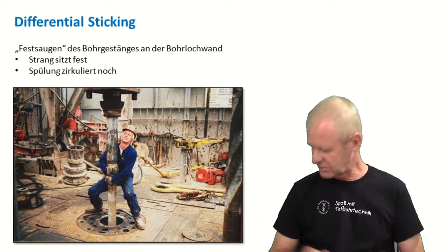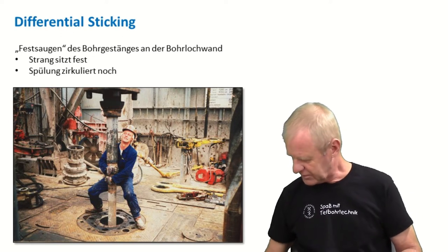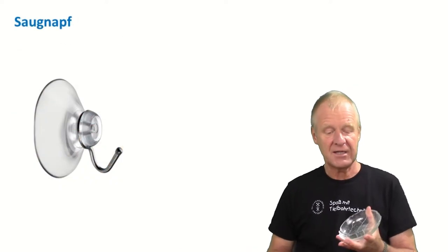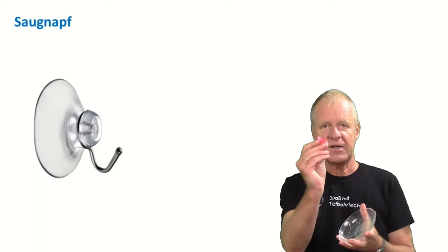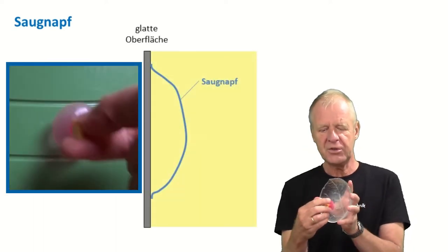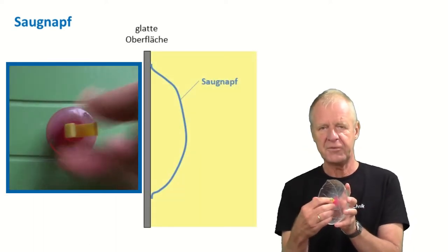It can be best explained with a suction cup. If I take such a suction cup and press it against a smooth wall, then the air under the cup is compressed and a part of it will escape through the edge of the cup.